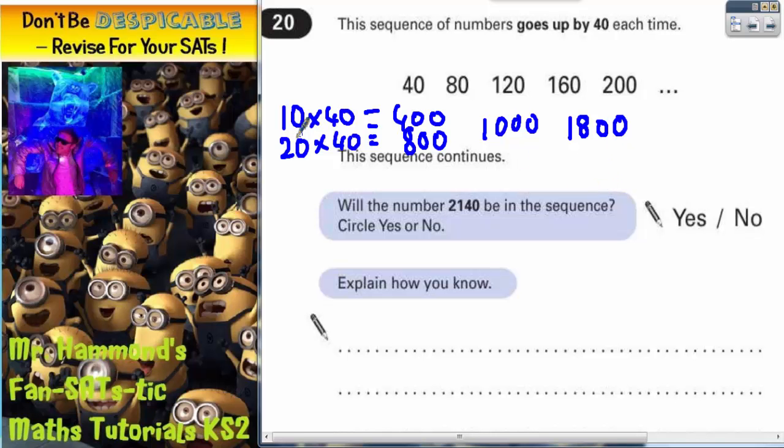Now, if I add another 10 lots of 40 onto that, add another 400 onto this sequence, that would be 2,200. So I know that 1,000 is definitely in the sequence, 1,800 is definitely in the sequence, and 2,200 is definitely in the sequence.